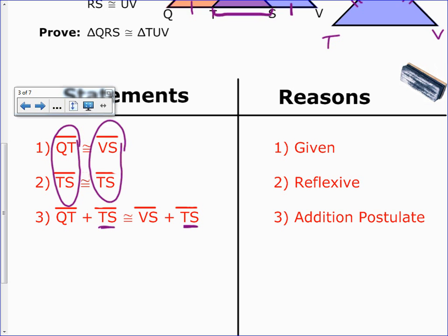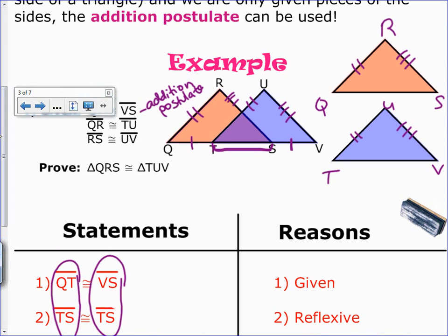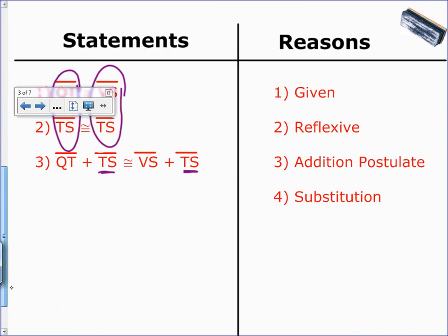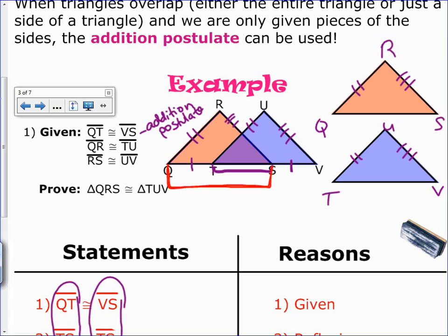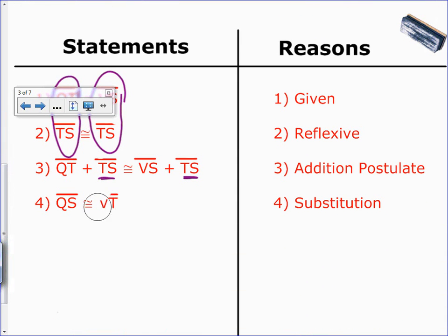Our last step is we're going to use substitution. We're just taking a look, saying what is QT plus TS? I look back at my picture. QT plus TS, another name for that is QS. And then I have VS plus TS. Look back at our picture again. VS plus TS, another name for that is TV, or VT. Then substitution. We're just substituting in a different name. That's your four steps of the addition postulate.